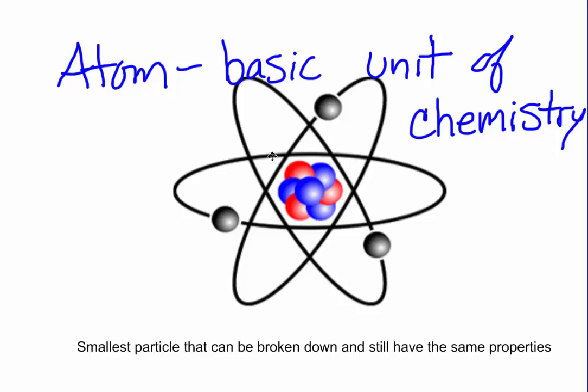If we were to look at this model we have here of an atom, we're going to notice that there's different parts to it. The first part that I want you to notice is in the center of this atom, we have what we call the nucleus. This area in here is the nucleus. This is the center of the atom. This is where all of the mass is found in an atom. The center of the atom is known as the nucleus.